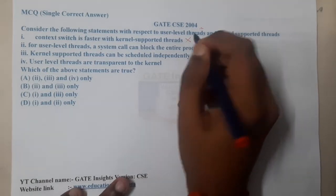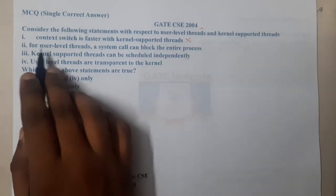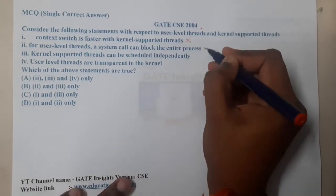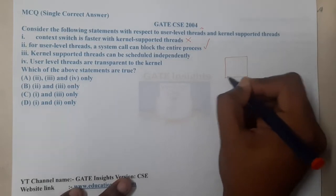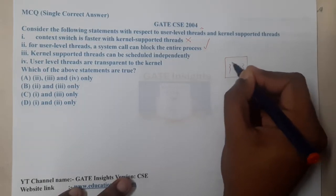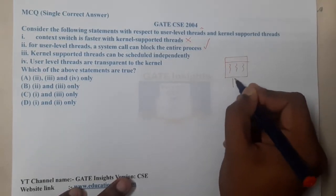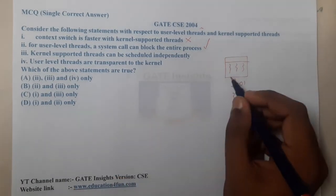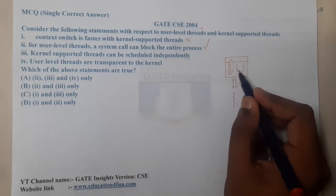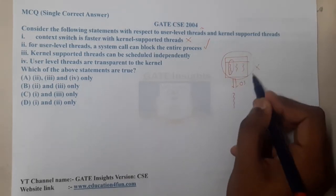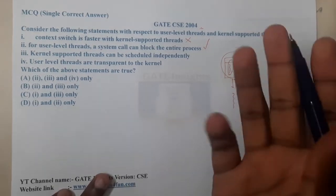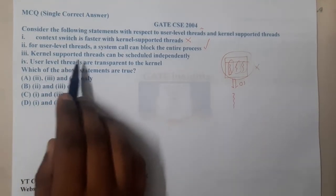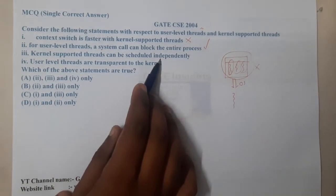Statement two says that for user-level threads, a system call can block the entire process — that is absolutely correct. User-level threads may have multiple threads internally, but the operating system sees them as a single thread. So if one thread does something blocking, the whole process gets blocked and the rest cannot execute.